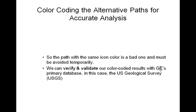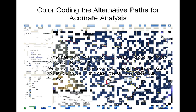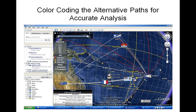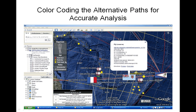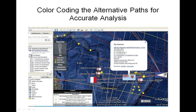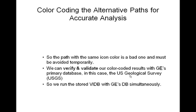We can verify and validate our color-coded results with Google Earth's primary database — in this case, the US Geological Survey. Here is a good validation example comparing our data against USGS earthquake data. When we magnify, we get ages from the past week corroborating with our analysis results in terms of custom icons on the map. So we run the stored visual intelligent database with Google Earth's database simultaneously.